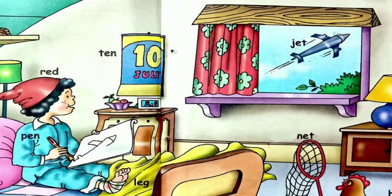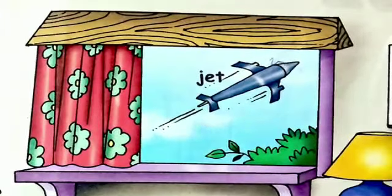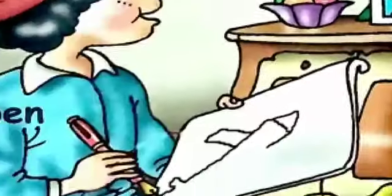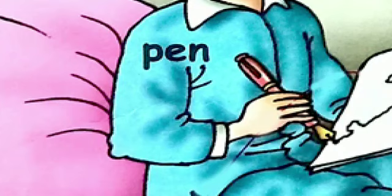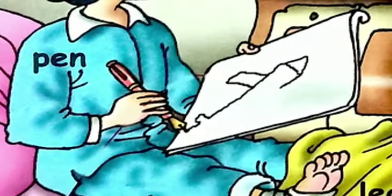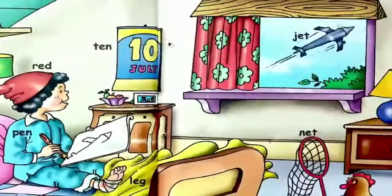She was looking out of the window. Do you know what she saw from the window? She saw a jet in the sky. Then she picked up her pen and she started to draw a jet on the paper with the pen.